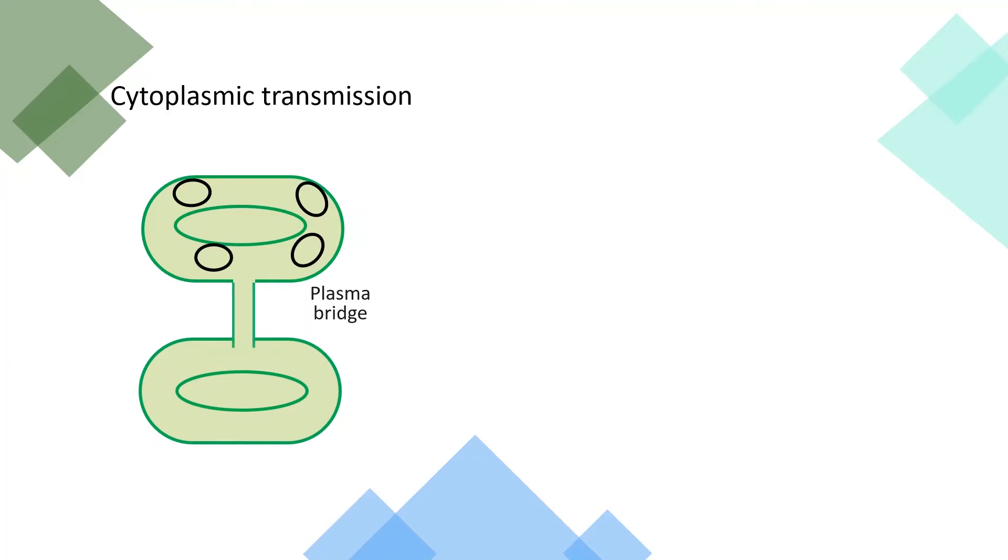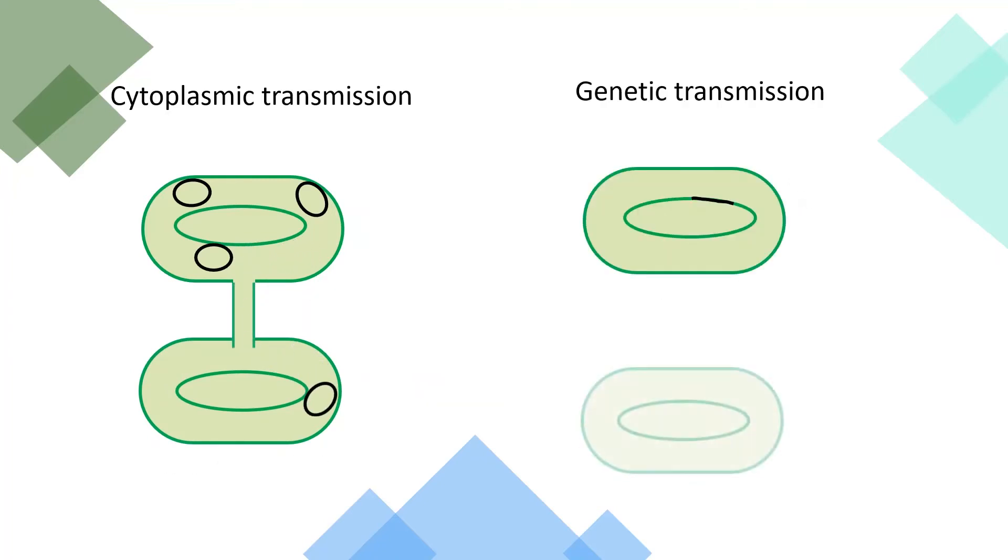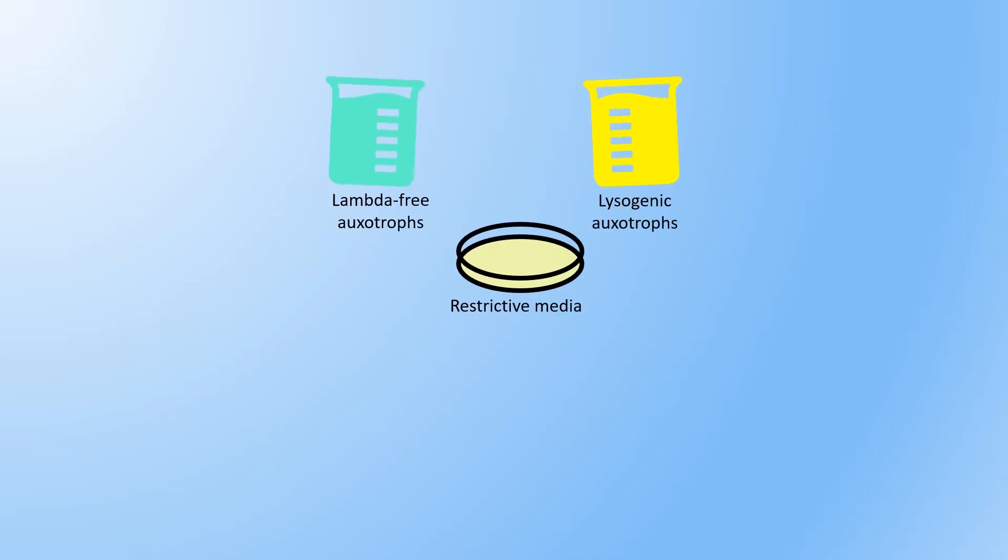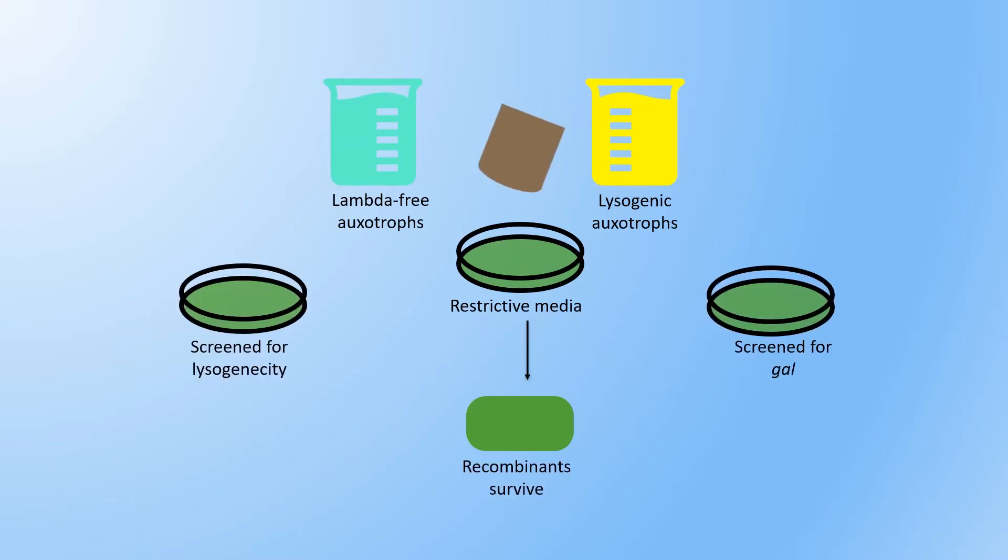With this, they aimed to identify the transmission mechanism of lysogenicity from two plausible hypotheses. Either the virus was transmitted as an independent plasmid in the cytoplasm or it was part of the chromosome itself. Their experiment went like this. Restrictive agars were inoculated with complementary E. coli strains, one being lysogenic and the other lambda-free. All these strains will die on the minimal media, except those that become recombinant prototrophs through conjugal gene transfer.